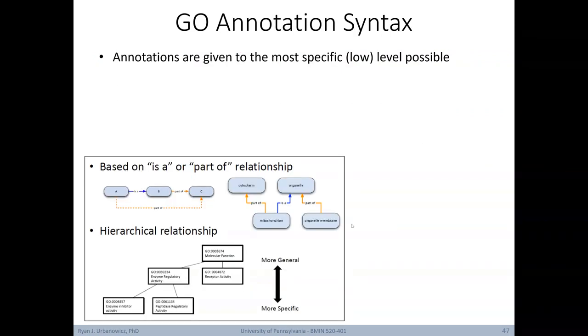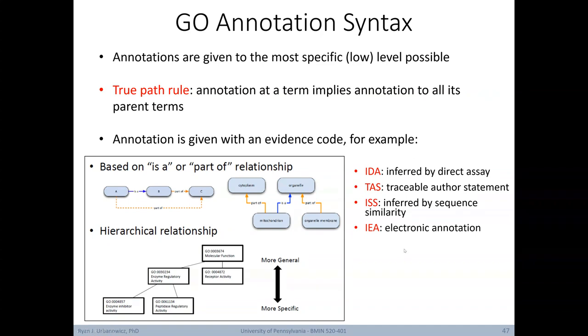When applying GO annotations, they're given to the most specific or lowest level possible. Such annotations rely on the true path rule. Basically, an annotation at a term implies annotation to all of its parent terms. For example, if we annotate a gene product with the GO term peptidase regulatory activity, there's an implied annotation to everything above it in the hierarchy. GO annotations are also given with an evidence code. For example, IDA indicates that the annotation was inferred by a direct assay. TAS indicates the annotation is traceable to an author statement. ISS indicates the annotation was inferred by a sequential similarity. And IEA indicates that the annotation was electronic.